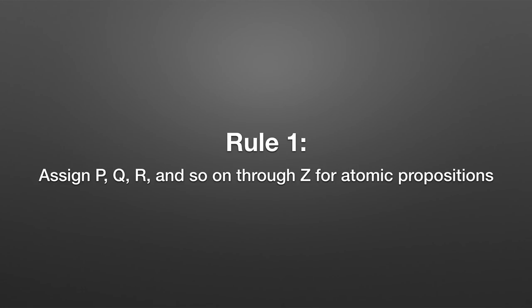We're going to use these letters for atomic propositions. The first rule is to use P, Q, R, and so on through Z for atomic propositions — do this in order. Don't start with A, B, C, D, or T. Start with P. One of the reasons I'm being so particular about this is that you'll be completing your homework on Canvas, and there needs to be a uniform way to turn in assignments. So it's one of the reasons why we have such strict rules.